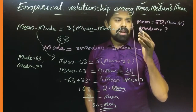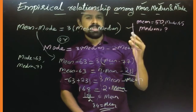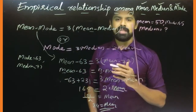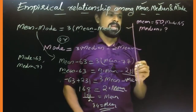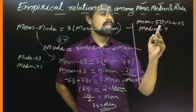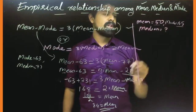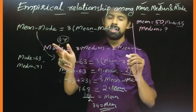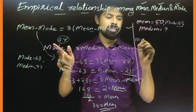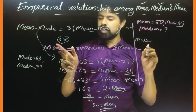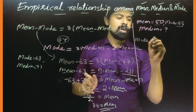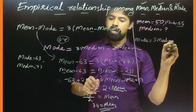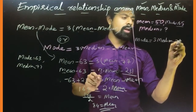The value of mean and the mode of a frequency distribution is 50 and 45 respectively. Find the median. We have mean equals 50 and mode equals 45. We need to find the median using the formula: mode equals 3 into median minus 2 into mean.